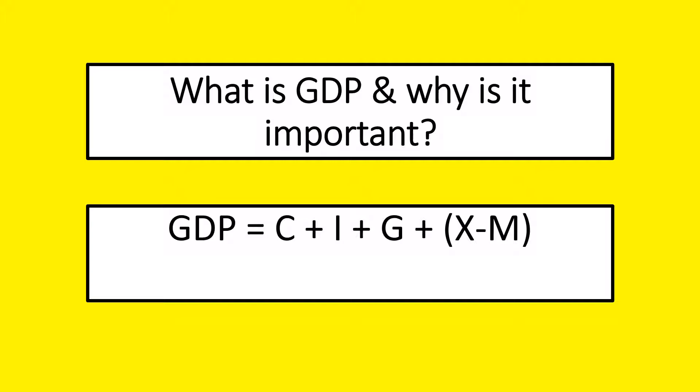We add that to G which is our government. So when the government builds a new school or spends money it goes into G. So that is government spending and then the X minus M.